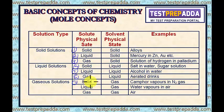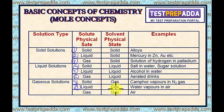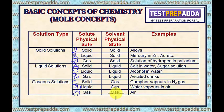(7) Solute solid, solvent gaseous — example: camphor vapors in N2 gas. (8) Solute liquid, solvent gaseous — example: water vapors in air. (9) Gas in gas — solute gaseous, solvent gaseous — example: air. These are the different types of solutions possible.